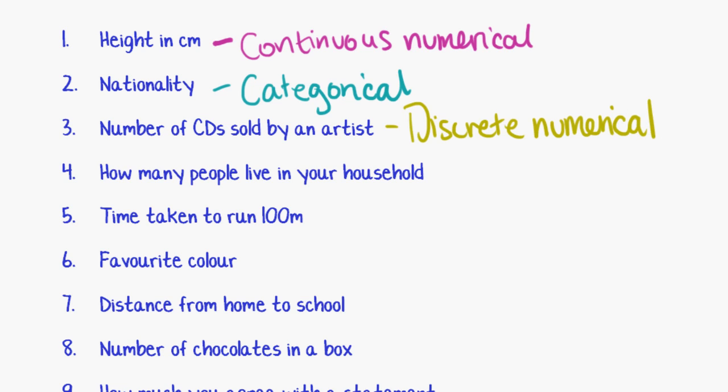Okay, so number four, how many people live in your household? Again, well this is going to be a number. There might be four people, there might be five people, there might be one person, but you can't have a decimal of a person. You can't have 2.5 people living in your household. So it's a number, but it can only be certain answers, making it discrete numerical.